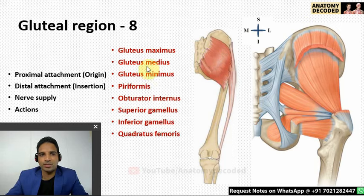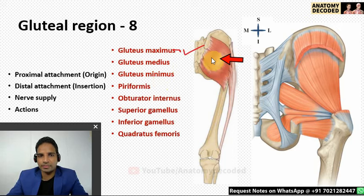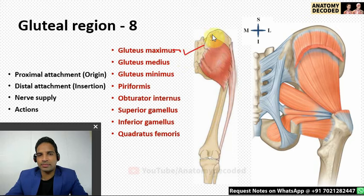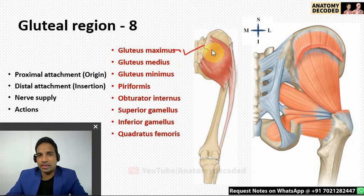Now let's cover the muscles of the gluteal region. The largest muscle is gluteus maximus. Its proximal attachment is on the posterior aspect of the iliac crest — the outer sloping surface — as well as from the sacrum, sacrotuberous ligament, and the gluteal surface of the hip bone behind the posterior gluteal line.